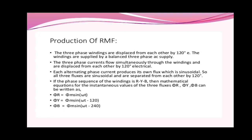The three-phase current flows simultaneously through the windings and are displaced from each other by 120 degrees electrically. Each alternating phase current produces its own flux which is sinusoidal, so all three fluxes are sinusoidal and are separated from each other by 120 degrees. If the phase sequence of winding is R, Y, B, then the mathematical equations of the instantaneous values of three fluxes φr, φy, φb are: φr = φm sin(ωt), φy = φm sin(ωt − 120°), and φb = φm sin(ωt − 240°).